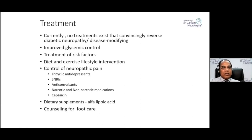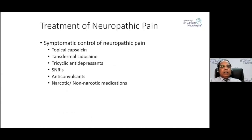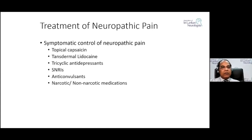For symptom control of neuropathic pain, topical capsaicin and transdermal lidocaine are used. Anticonvulsants — mainly pregabalin and gabapentin — are used, with pregabalin being FDA-approved as a first-line treatment for diabetic neuropathic pain. Duloxetine (SNRI) is also an important drug. Tricyclic antidepressant amitriptyline is a cheap and effective option. For severe cases, tramadol may be used.